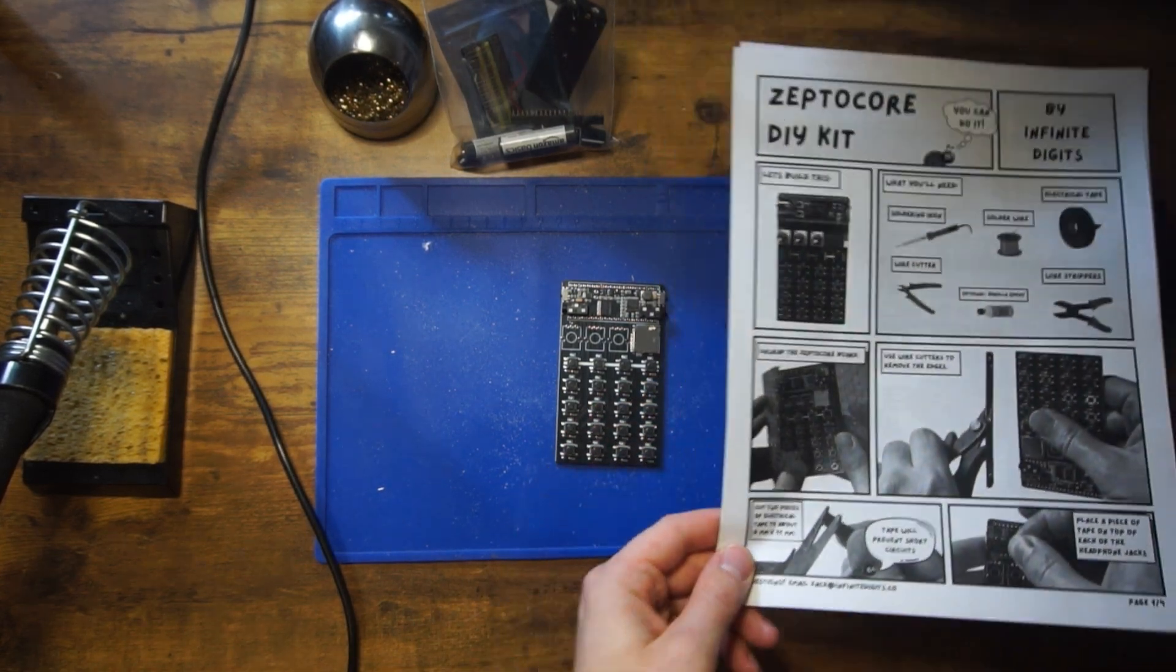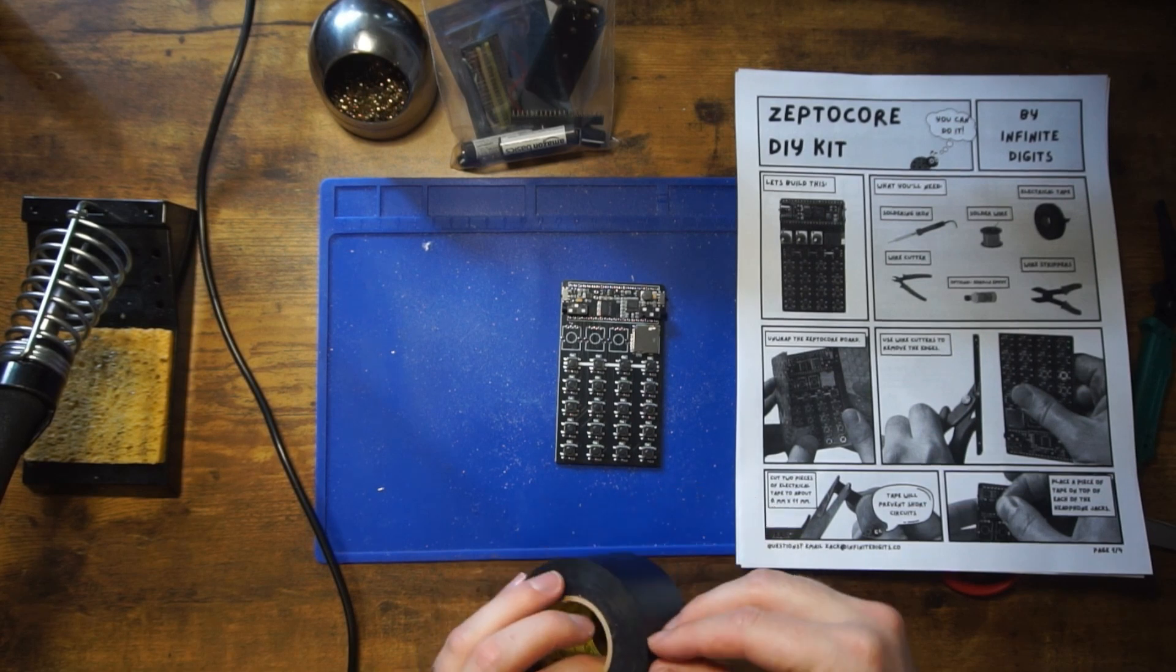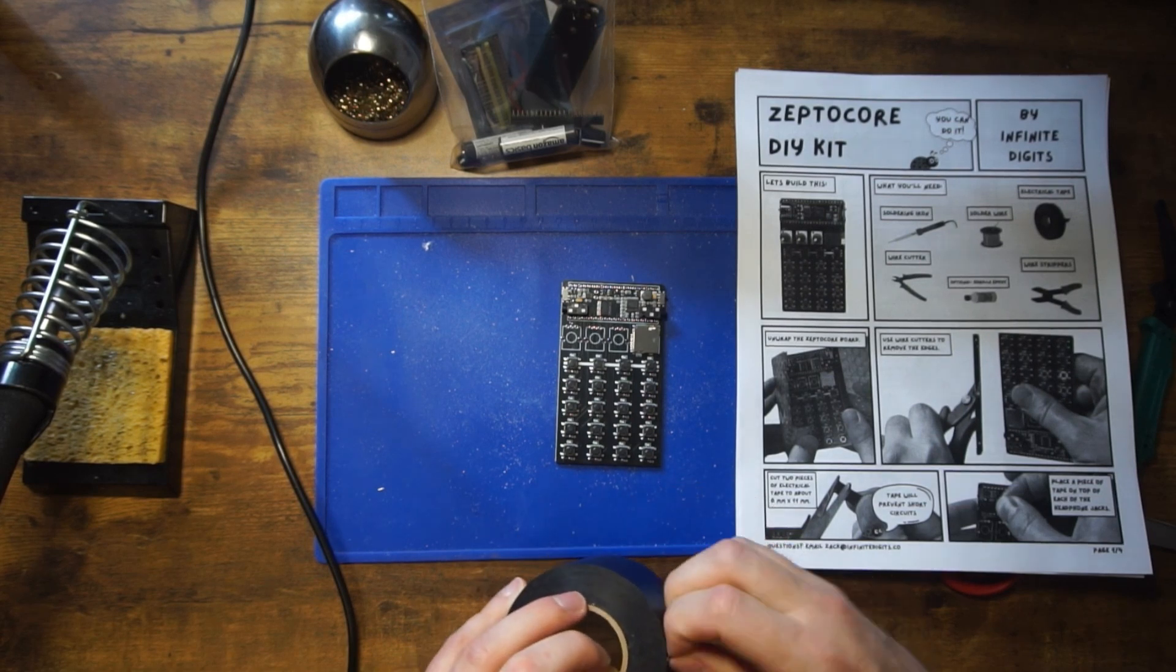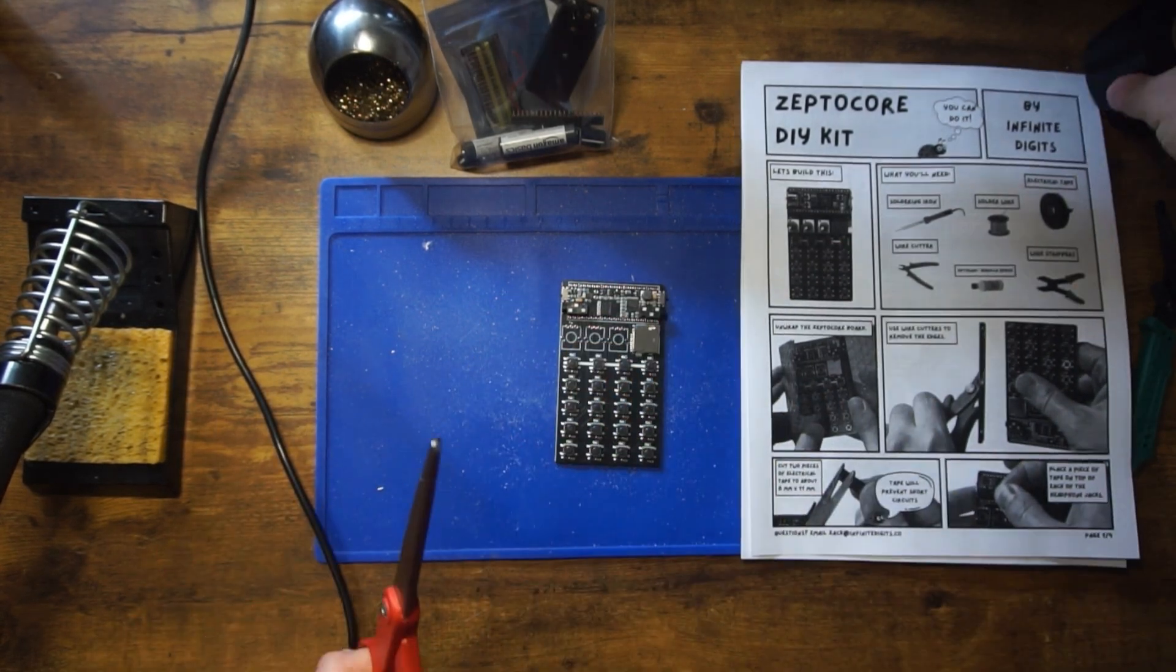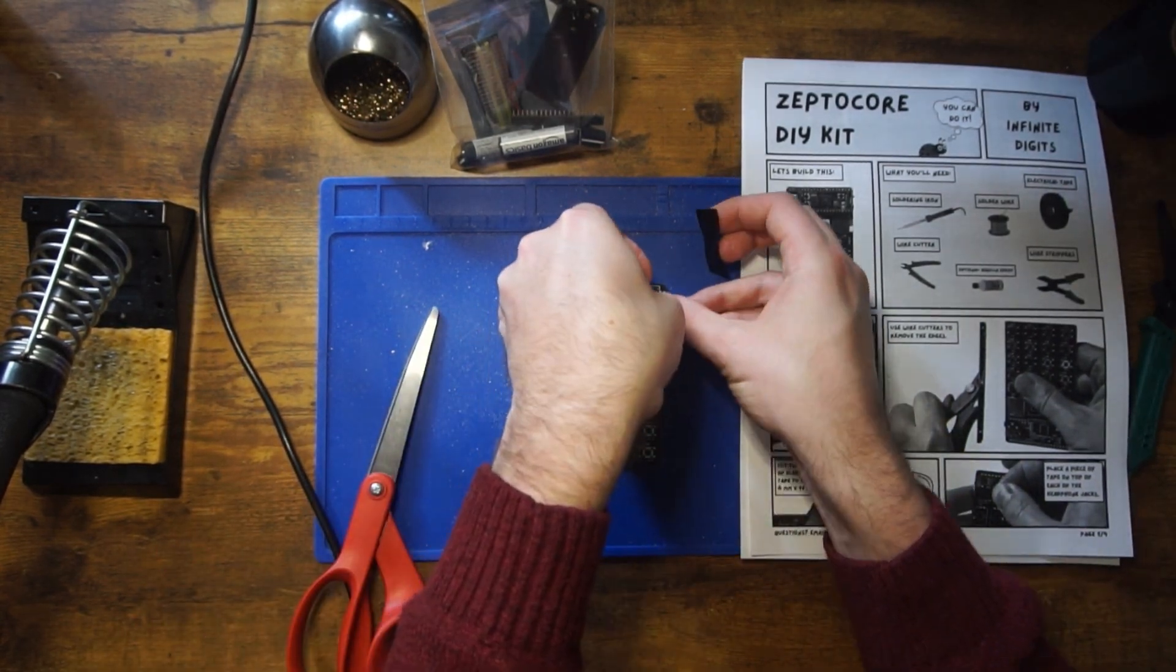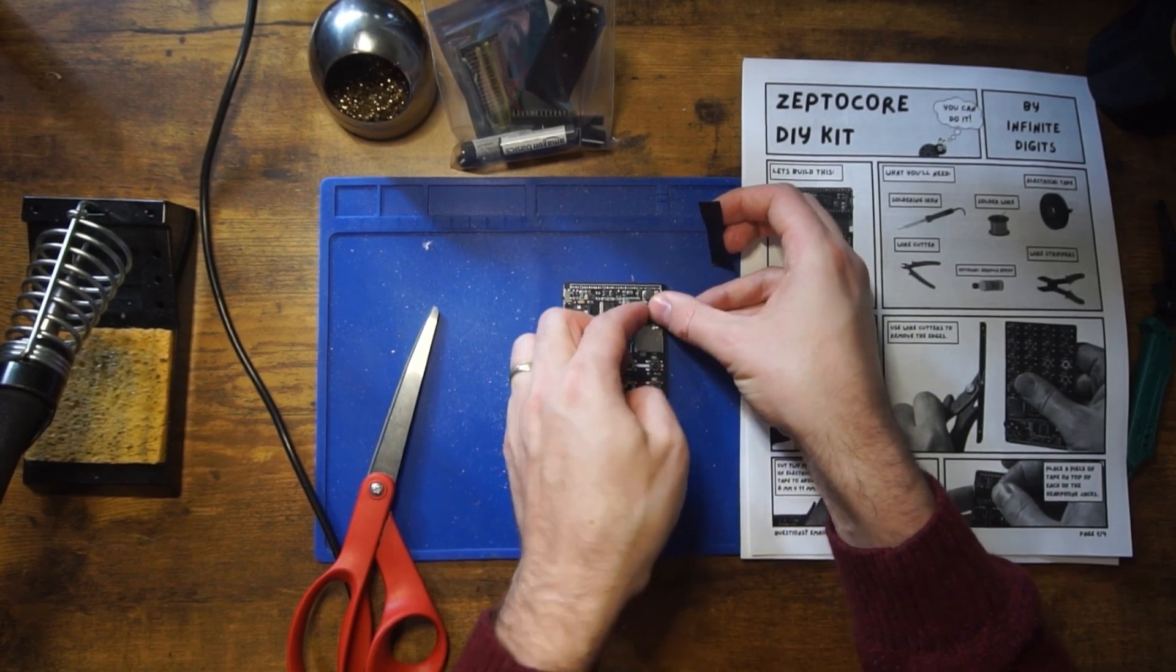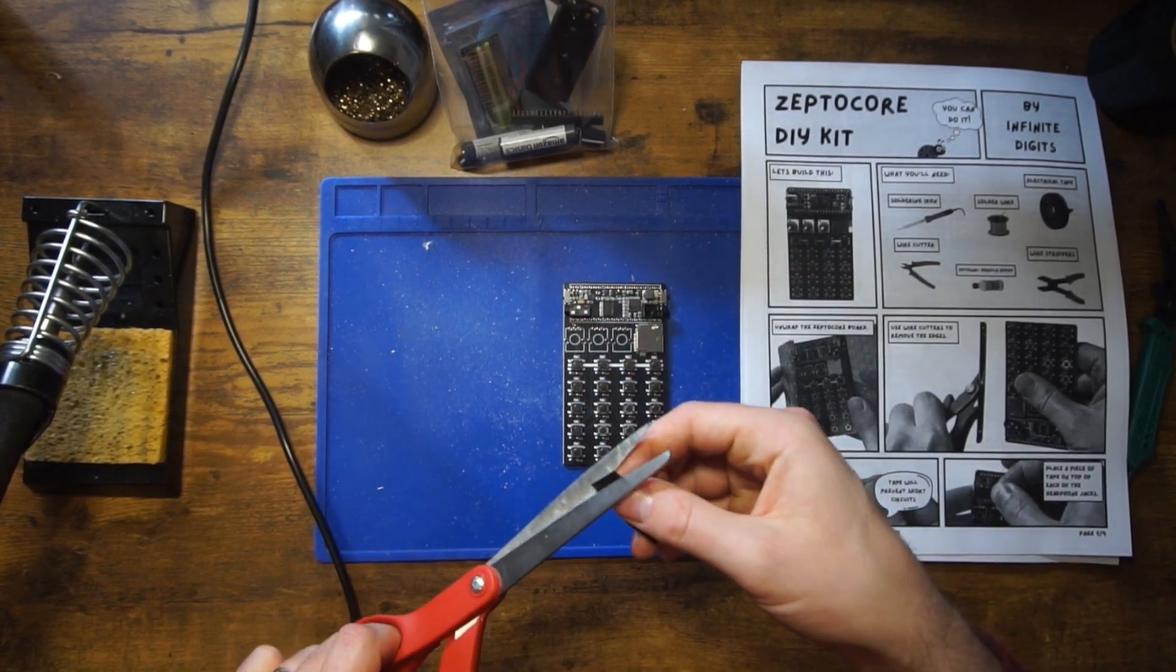Now you're going to want to get some tape and cut the tape into two tiny strips, about six millimeter by 11 millimeter each. These strips will go right atop the headphone jacks, and this is just to prevent any spurious electrical connections.